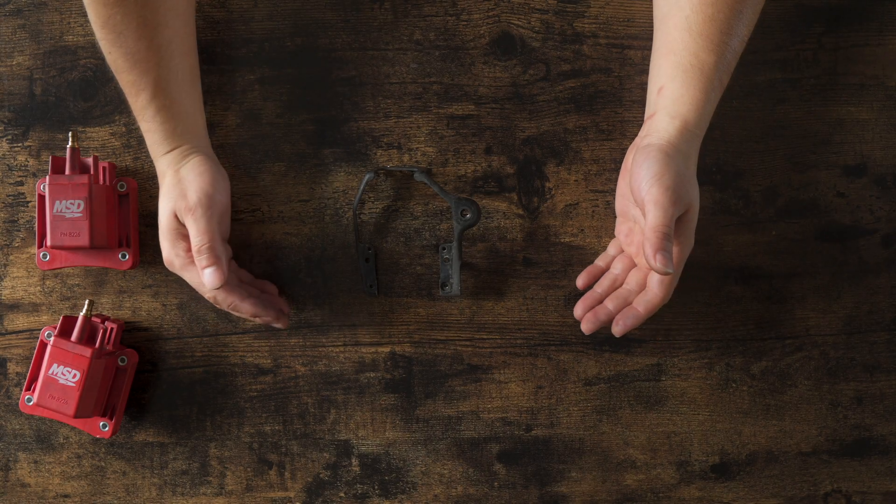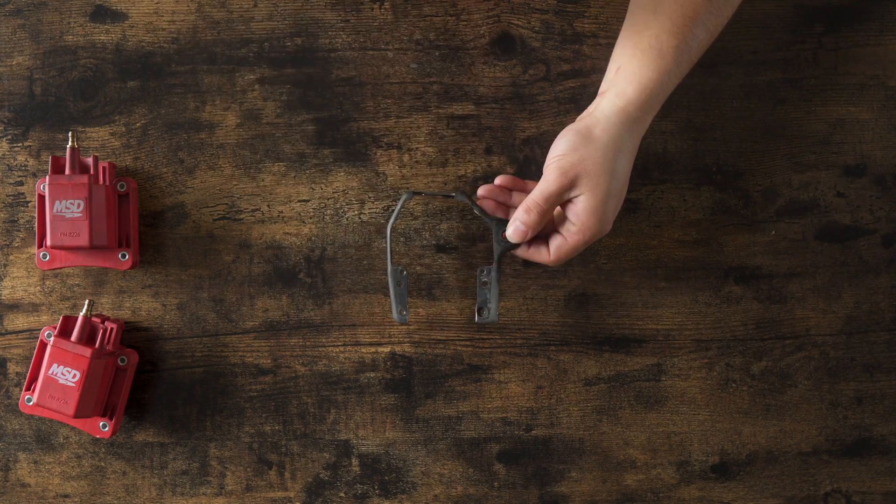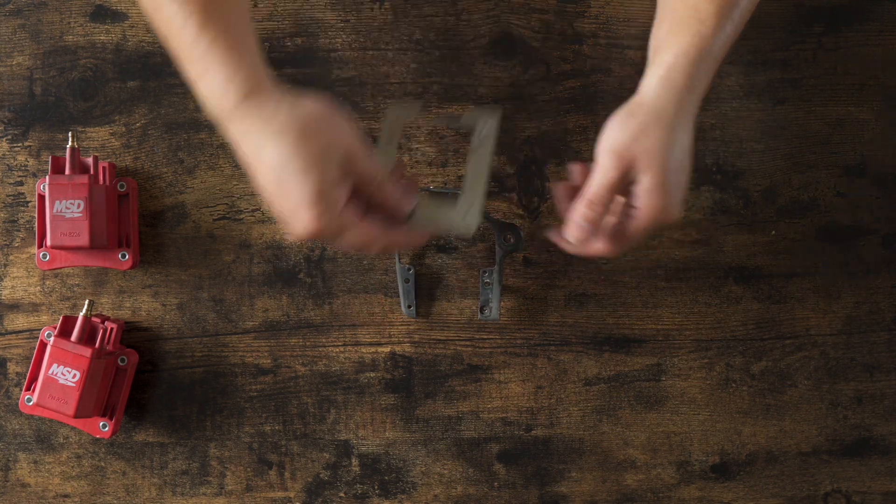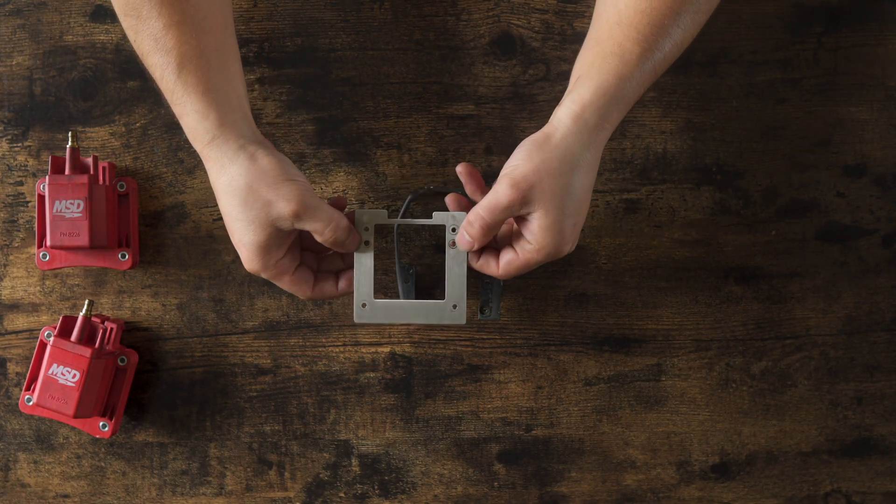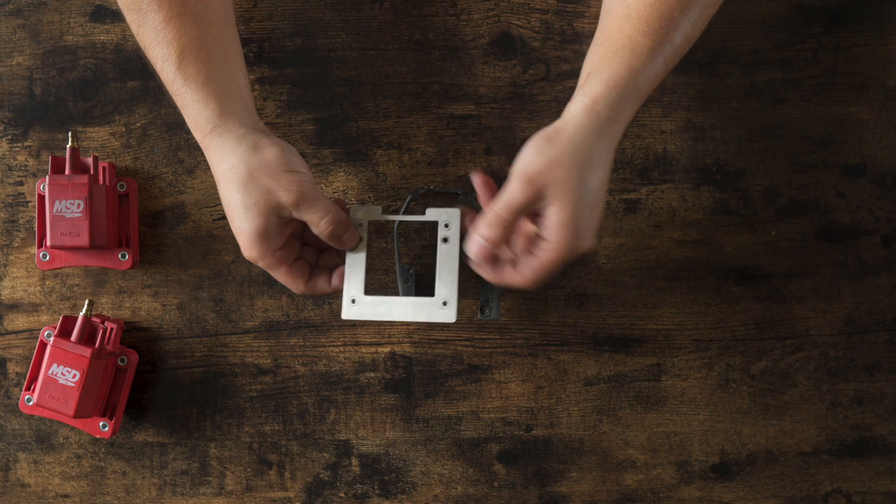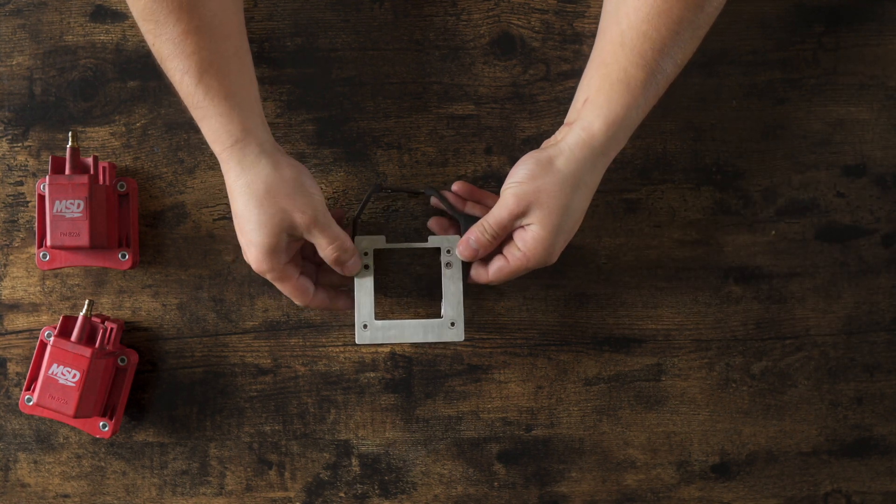Okay, so we're first going to start with the first generation kit. So I'm going to use this non-powder-coated bracket just to show you. These holes here in the middle, they are not threaded, and those are the ones that we're going to go for right now.